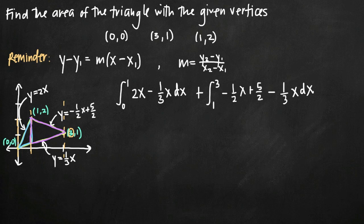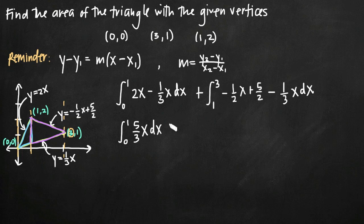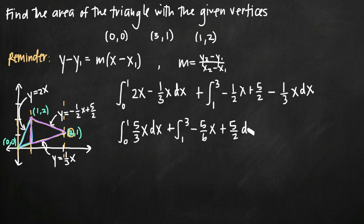Now we simplify the integrands. For the first integral, 2x − ⅓x = 6/3·x − 1/3·x = 5/3·x, so we integrate (5/3)x from 0 to 1. For the second integral, −½x − ⅓x = −3/6·x − 2/6·x = −5/6·x, plus 5/2, so we integrate −(5/6)x + 5/2 from 1 to 3.